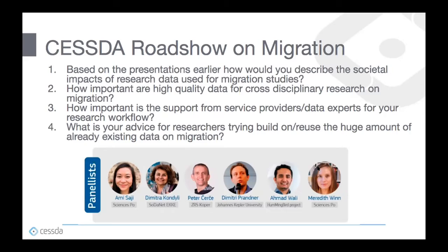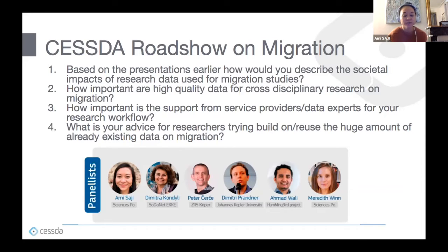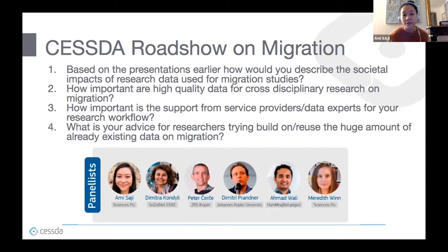Listening to the various presentations and learning how these different projects have leveraged access to the data catalog and DMEG, it's really clear that these types of services are instrumental to improving how research is done within the social sciences. I'm also inspired to think more about how we can create common languages across these different services, because there's a lot of opportunity to leverage all these services together to do effective research.